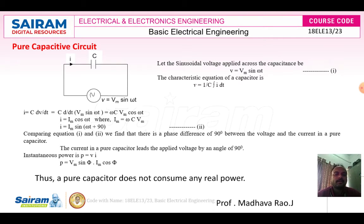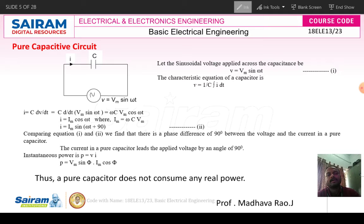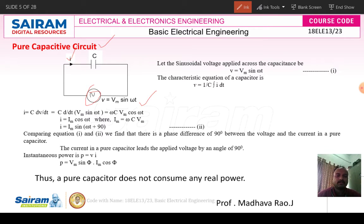Let us consider a pure capacitor connected to an alternating voltage source V = Vm sin(ωt), as shown in this figure. Due to the voltage source, alternating current flows, and the capacitor will get charged. That charge Q is given by the charge on the capacitor.